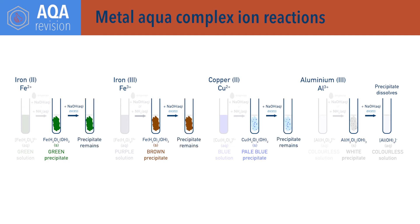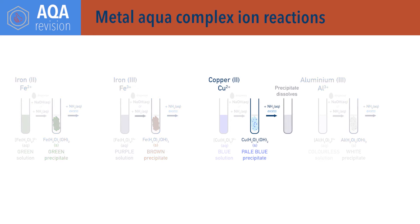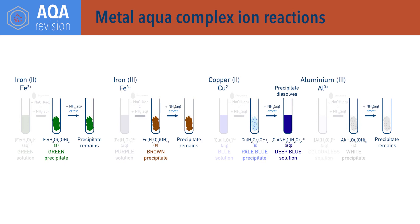If ammonia solution is added in excess to any of the metal hydroxides, the light blue copper(II) hydroxide precipitate redissolves and a deep blue solution containing [Cu(NH₃)₄(H₂O)₂]²⁺ complex ions is formed. The other metal hydroxide precipitates remain unaffected by the addition of excess ammonia.